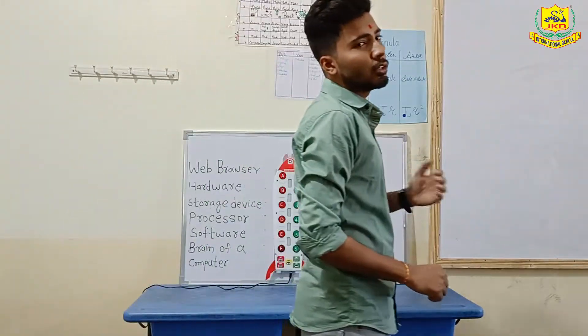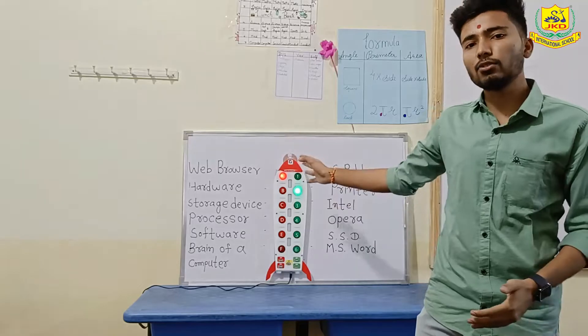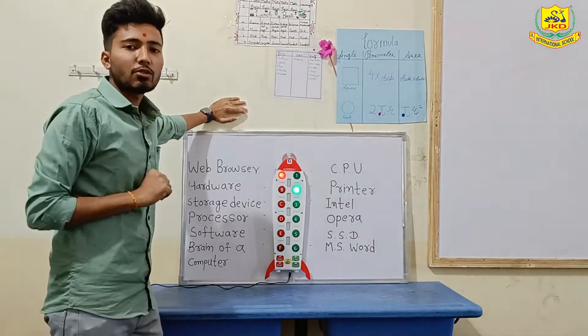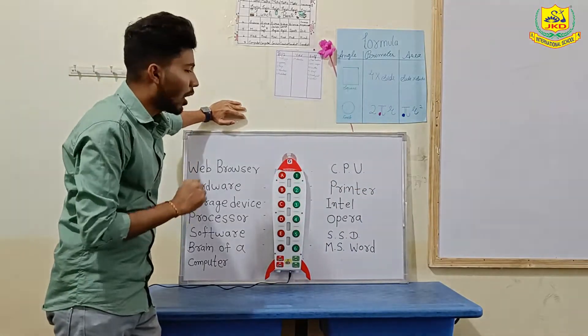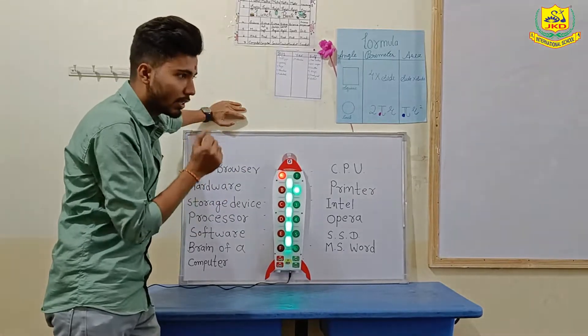Now I am going to call the students to come up here and they will get the answer on this board. The first question is: Web browser. You have to tell us about this web browser, so the right answer — it is also concise.